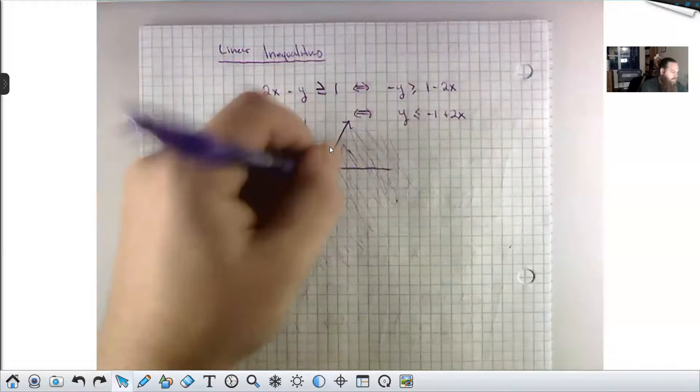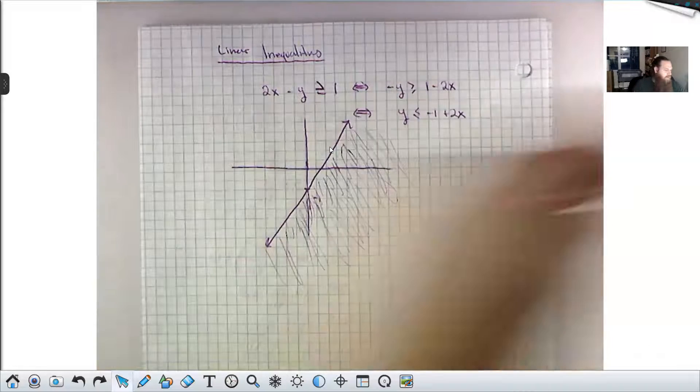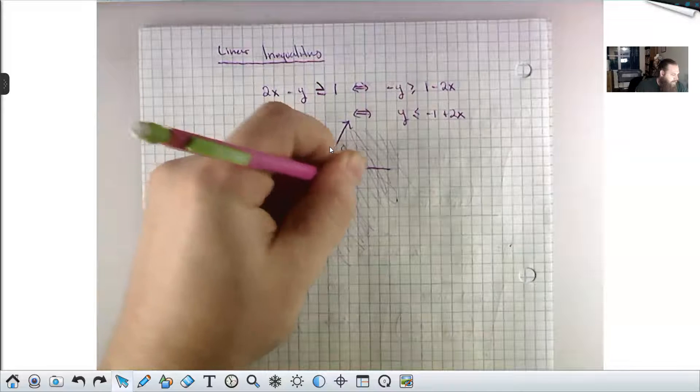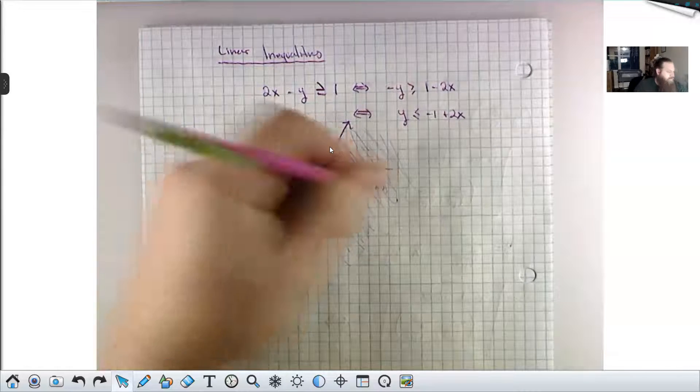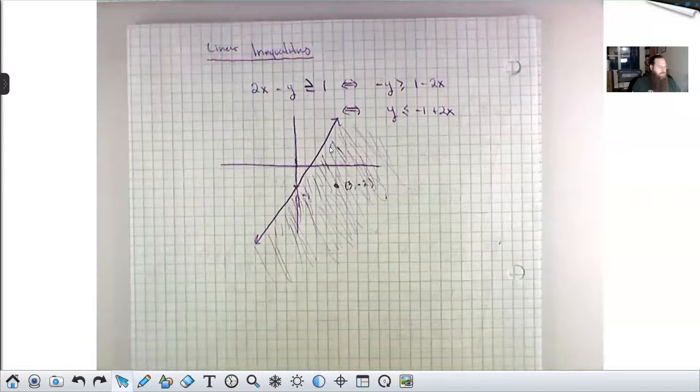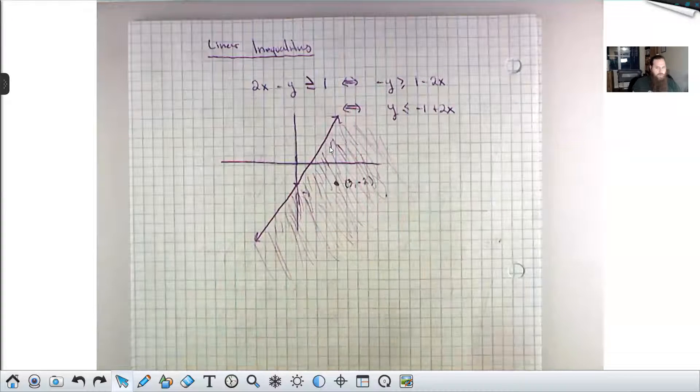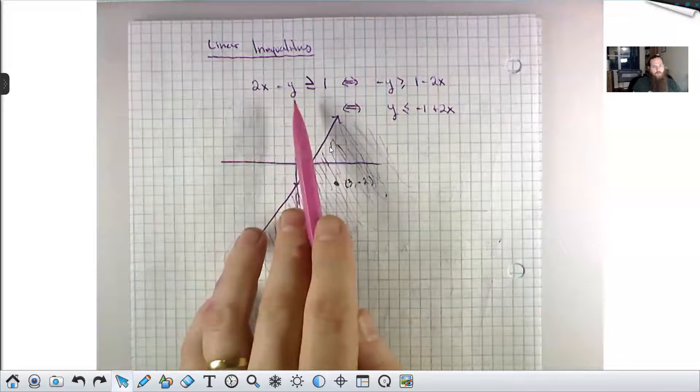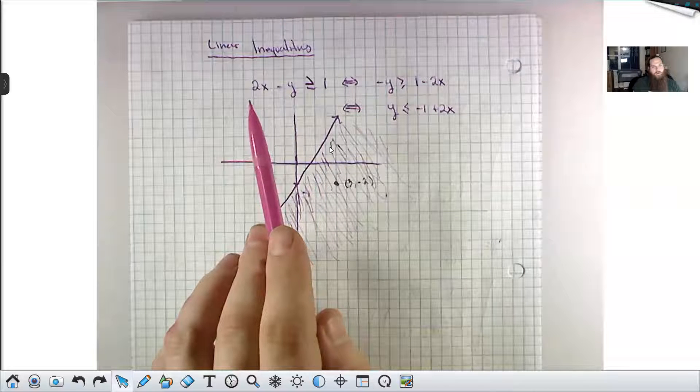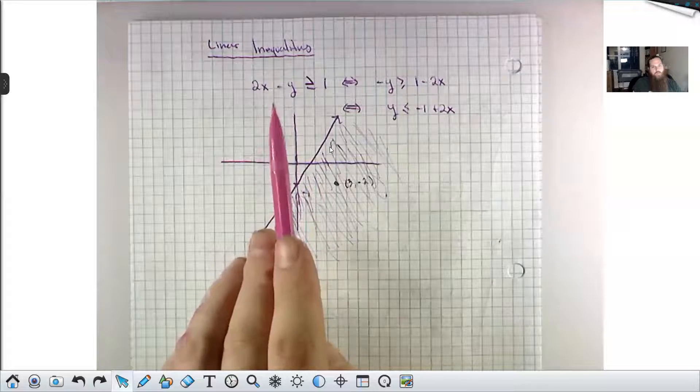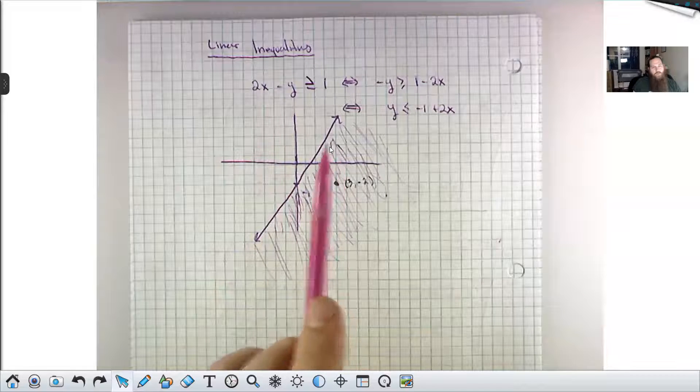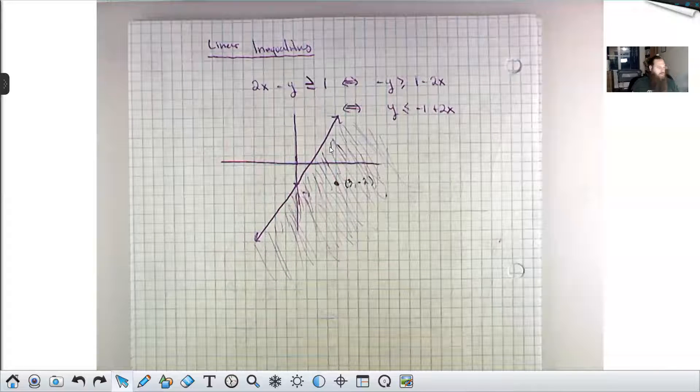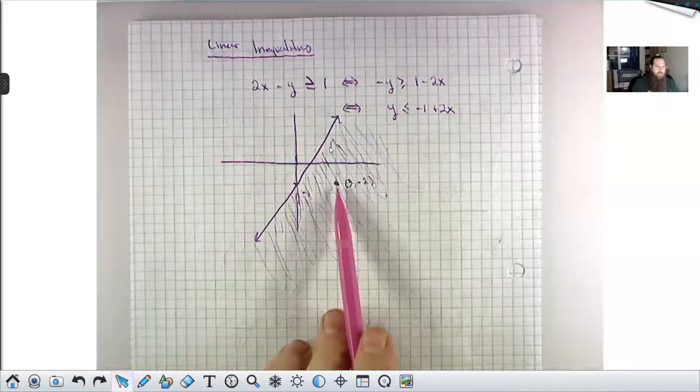If you're going to take any point down here that's in this region I shaded earlier and check it, like for example, maybe right here I've got 3 comma negative 2. If you were to take that and plug it in here, or into the original, they're equivalent, you get a true statement. If I plug in 3 for x and negative 2 for y, then this would be 2 times 3, which is 6, minus negative 2, which is 6 plus 2. And 6 plus 2 is 8, which certainly is bigger than 1. So that's what it means to say this point is in the solution space.